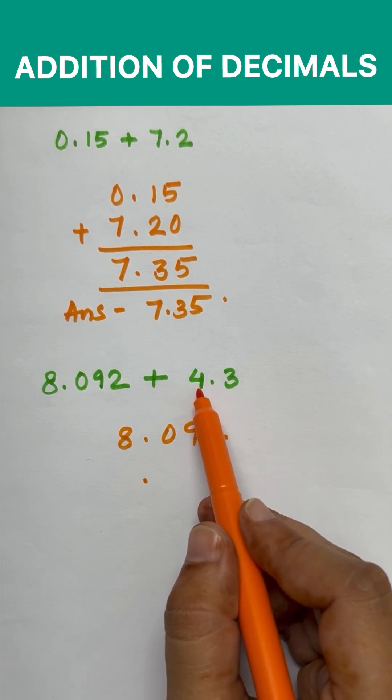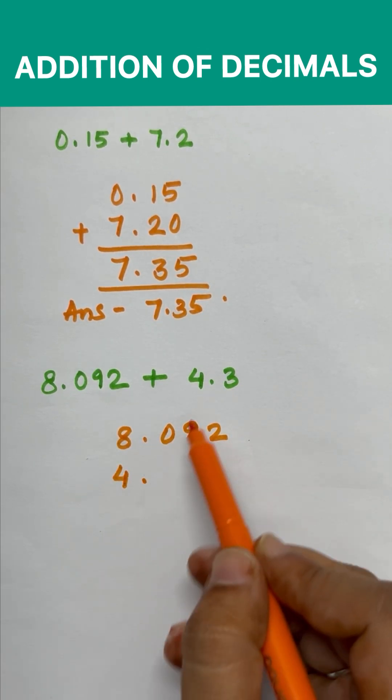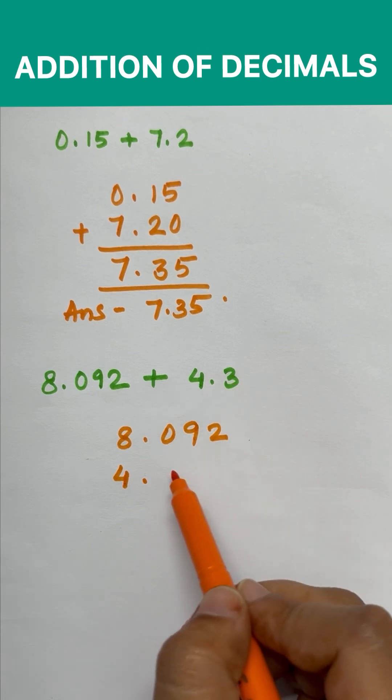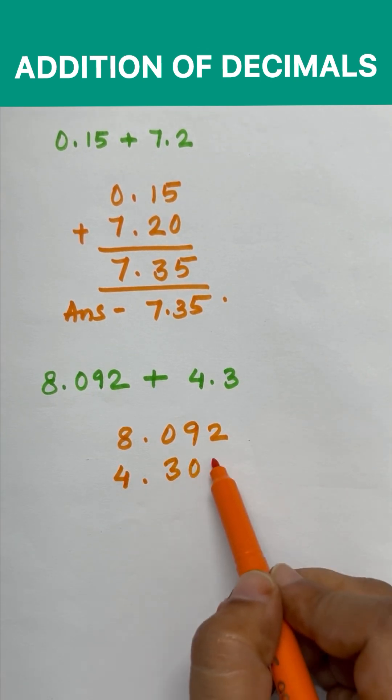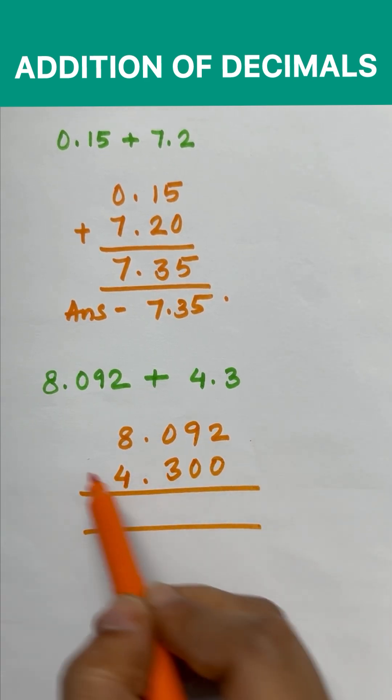On the left side 4 is written. So we will write 4 here and on the right side 3. We will put 0 here. Now we will add.